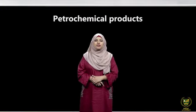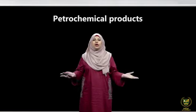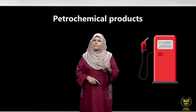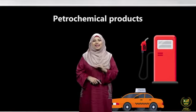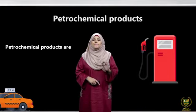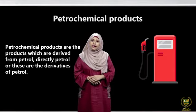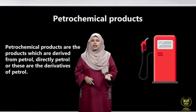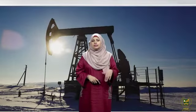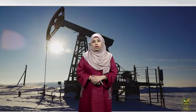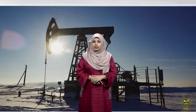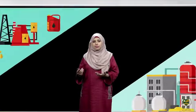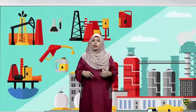First are petrochemical products. As the name indicates, it involves petrol. Petrochemical products are the products which are derived from petrol — either directly petrol or derivatives of petrol. When we extract oil from the earth, that is called crude oil, and from crude oil we make other petrochemical products by refining or by modifying them.